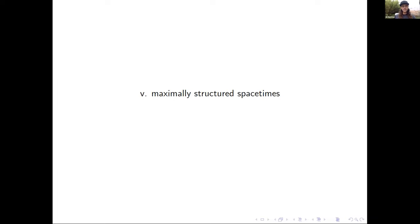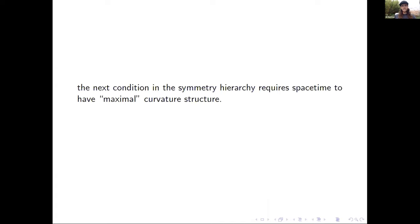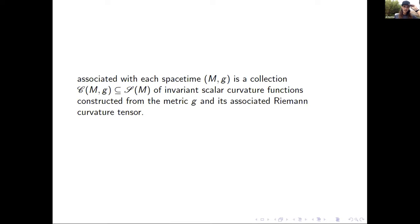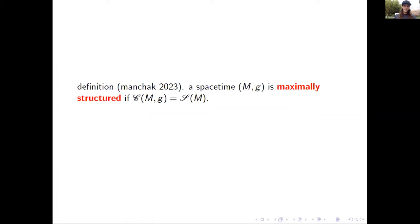Finally, to the highest level of the hierarchy — this condition requires spacetime to have maximal curvature structure. For any manifold M, consider the collection S(M) of smooth real-valued scalar functions on M. Associated with each spacetime (M, g) is a collection C(M,g), a subset of S(M): these are the smooth invariant scalar curvature functions constructed from the metric and its associated Riemann curvature tensor and covariant derivatives. We say a spacetime is maximally structured if the collection of invariant scalar curvature functions just is the collection of all smooth functions — every smooth function on the manifold corresponds to some invariant scalar curvature function.